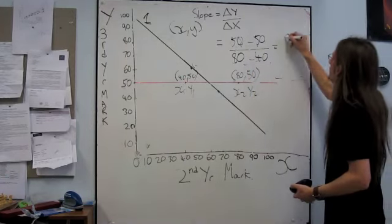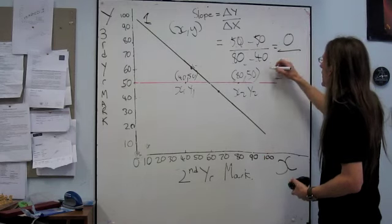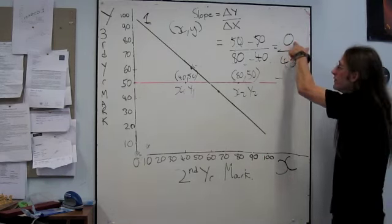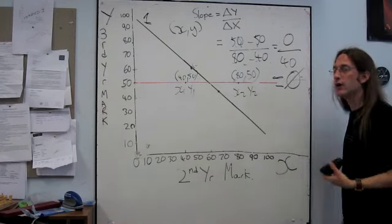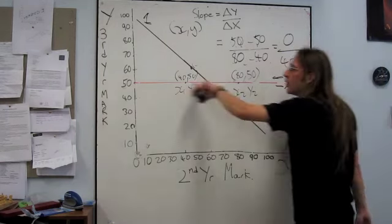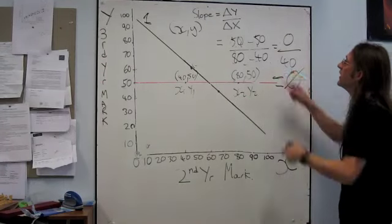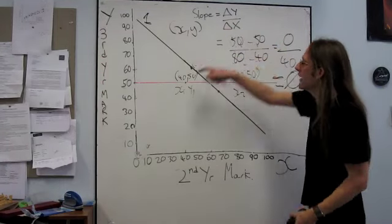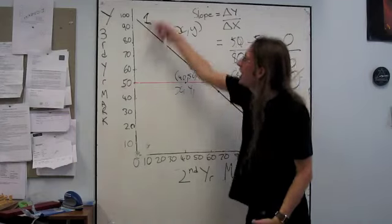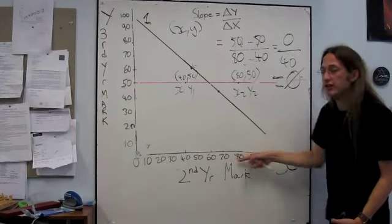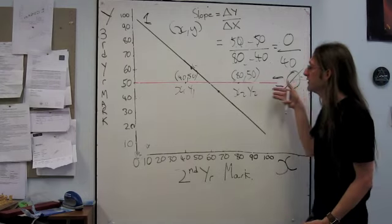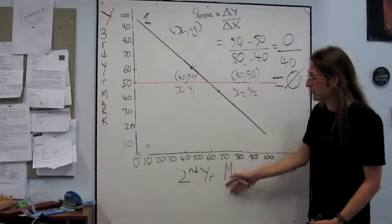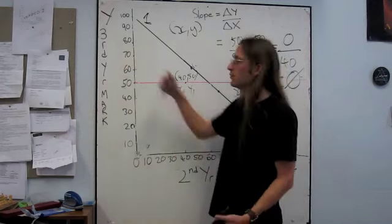50 minus 50 is 0, divided by 40. Whenever you have a 0 divided by any number, then the answer is always 0. So for a flat line, the slope is always 0, because there's no change in y. y isn't changing. There's no change in y as x increases. So if you get a slope value of 0, that's telling you that you've got a flat function. There's basically no relationship between this variable and this variable.